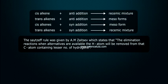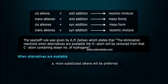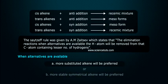The Zaitsev rule was given by A.M. Zaitsev, which states that in elimination reactions, when alternatives are available, the hydrogen atom will be removed from that beta carbon atom containing less number of hydrogens. When alternatives are available,